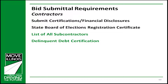A request for subcontractor information and delinquent debt review is included in the Illinois Tollway Standard Business Terms and Conditions. Per Procurement Code, bidders must list all subcontractors to the extent known at the time of bid. This information is used to check whether any of the proposed subs are barred from entering into a contract with the State due to delinquent payment of debt. Contracts may add subcontractors after notice of award, but each request will be reviewed for compliance.